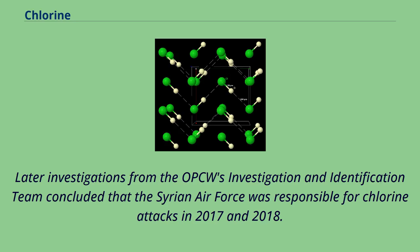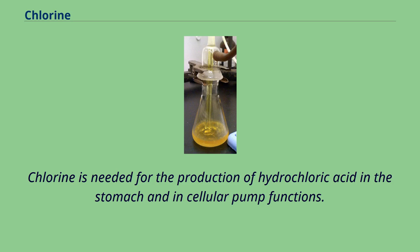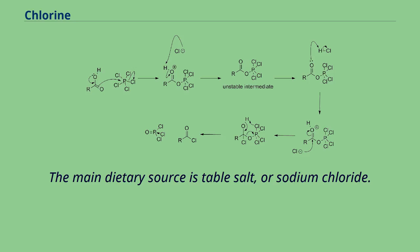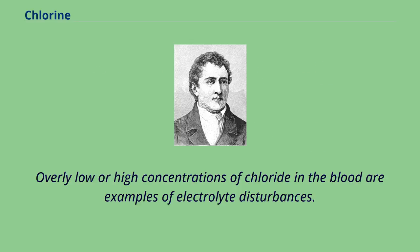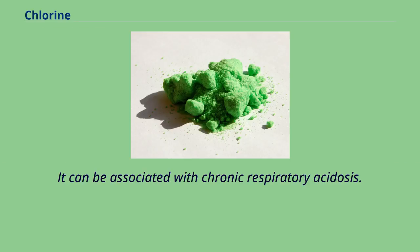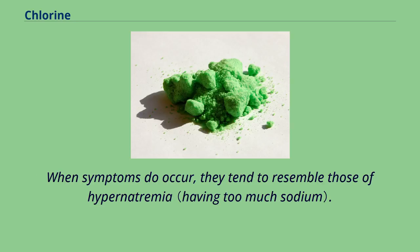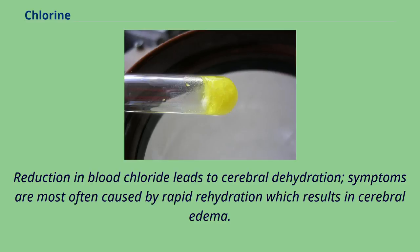The chloride anion is an essential nutrient for metabolism. Chlorine is needed for the production of hydrochloric acid in the stomach and in cellular pump functions. The main dietary source is table salt, or sodium chloride. Overly low or high concentrations of chloride in the blood are examples of electrolyte disturbances. Hypochloremia rarely occurs in the absence of other abnormalities; it is sometimes associated with hypoventilation and can be associated with chronic respiratory acidosis. Hyperchloremia usually does not produce symptoms; when they do occur, they tend to resemble those of hypernatremia. Reduction in blood chloride leads to cerebral dehydration; symptoms are most often caused by rapid rehydration, which results in cerebral edema. Hyperchloremia can affect oxygen transport.